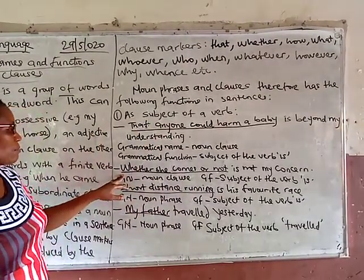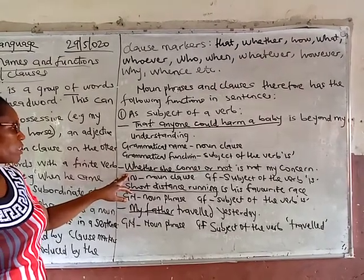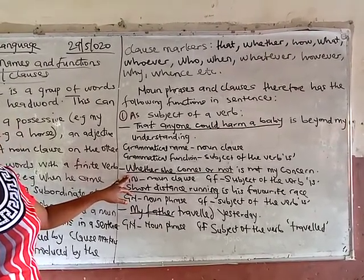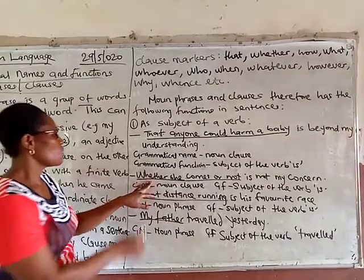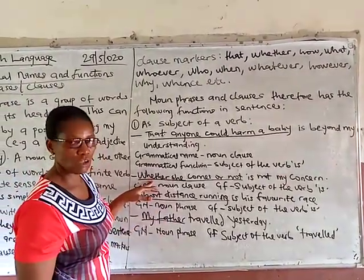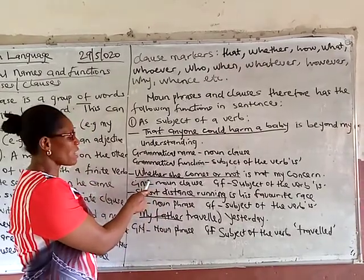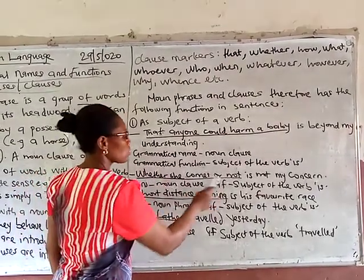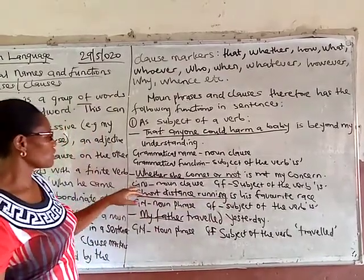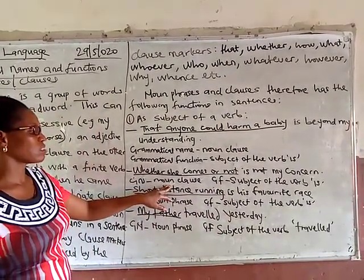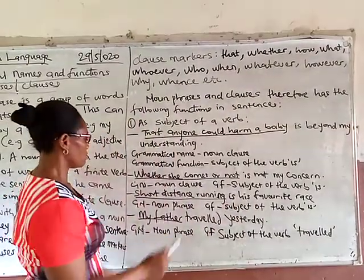Another example: 'whether she comes or not is not my concern.' The noun clause is 'whether she comes or not', introduced by the clause marker 'whether', and it comes immediately before the verb 'is'. Therefore, the grammatical name is noun clause, and the grammatical function is subject of the verb 'is'.